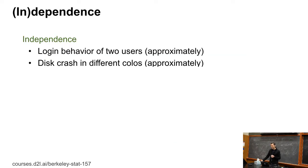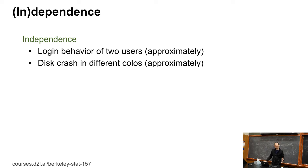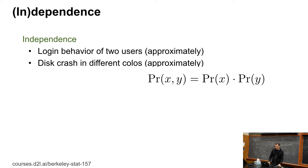But this is a deep learning course, so we don't need to go into a lot of detail here. A couple of useful things: independence. For instance, the login behavior of two users is approximately independent. Crashes in different colos are approximately independent — though maybe not entirely, depending on whether you get a bad batch of disks and they all fail at the same time. But then, conditioned on it being a bad batch, they would be independent again. If we have something that's independent, we can just write P(X, Y) = P(X) × P(Y).